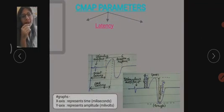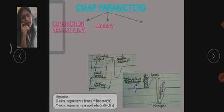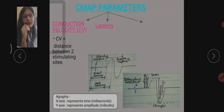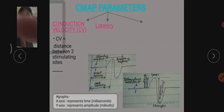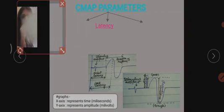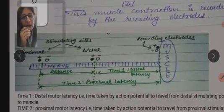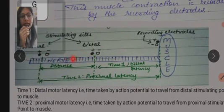Now coming to the parameters. There are three parameters on which we study the nerve conduction velocity of a motor nerve. The first parameter is conduction velocity. The conduction velocity is equal to the distance between the two stimulating sites divided by time two minus time one. The distance is measured between the proximal and distal stimulating points.